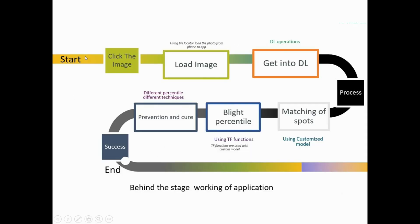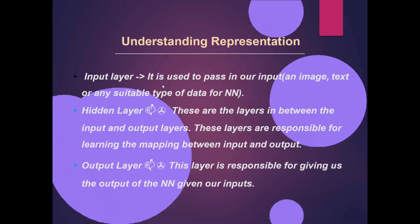Here is the flowchart or structure of the project. First, click the image, then load image, then get into the model catching the spot of the images, then blight percentile — the algorithm calculates the blight percentile — and then prevention and cure. The last part is the success understanding representation, using many layers: input layer, hidden layer, and output.